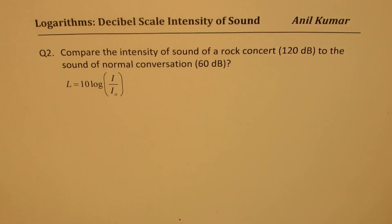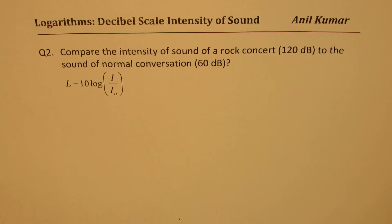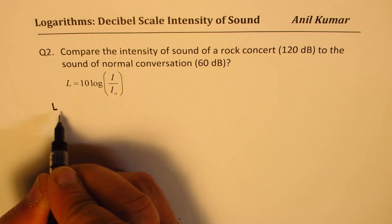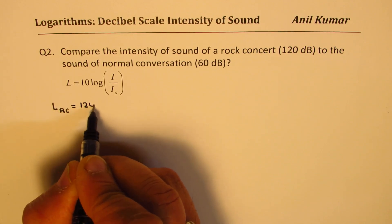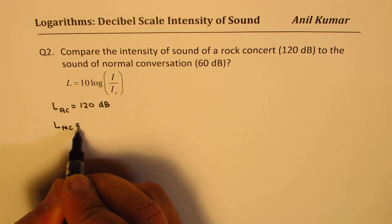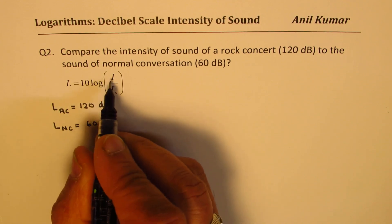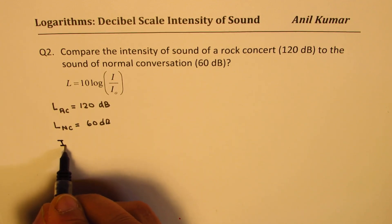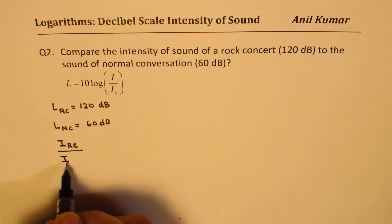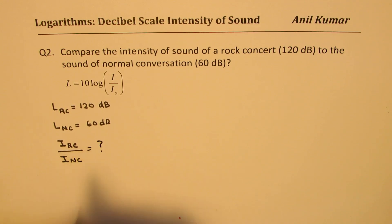Now let's take the second example. Compare the intensity of sound of a rock concert at 120 decibels to the sound of normal conversation at 60 decibels. What we are given is the loudness for rock concert as 120 decibels and the loudness for normal conversation as 60 decibels. We need to find the ratio of intensity of sound due to the rock concert over intensity of sound due to normal conversation. We can use the formula L equals 10 log of I over I₀.